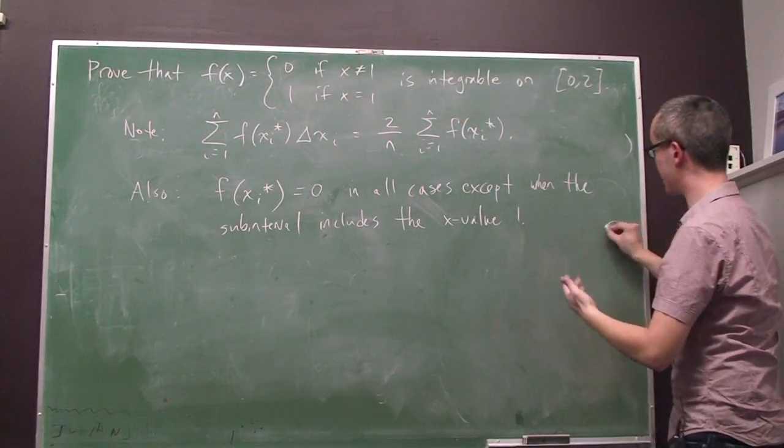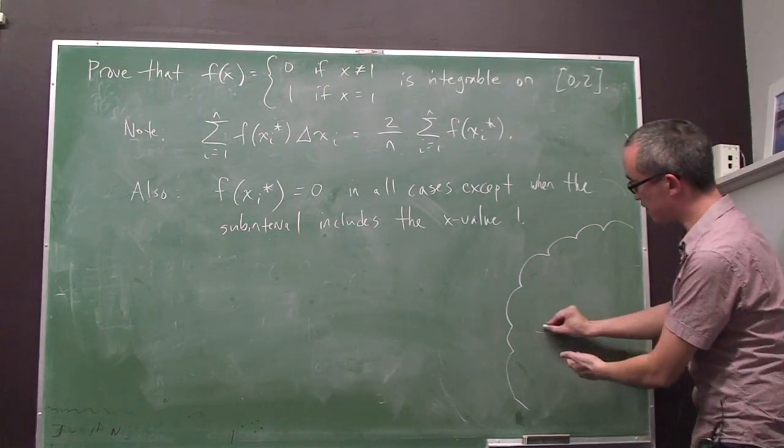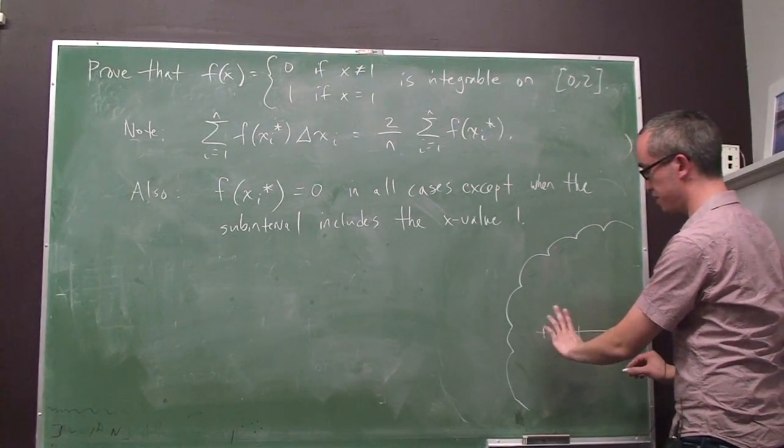So, if I draw a picture on the side, what I mean by that is, alright, so here's 1. If I take a subinterval, if I have a subinterval here, all of my choices of sample points are going to give me a height of 0.